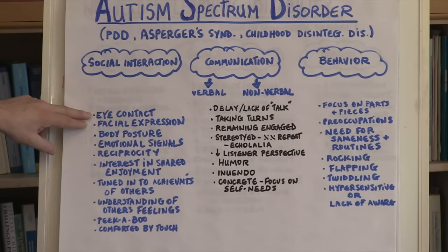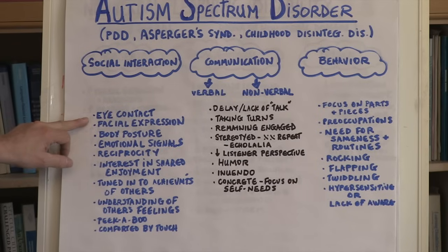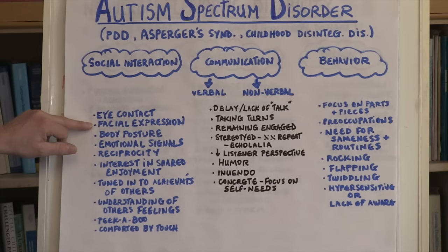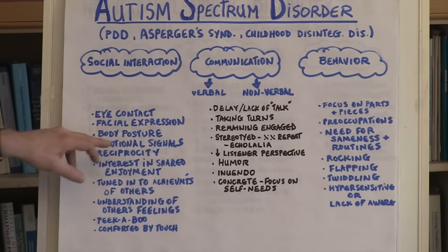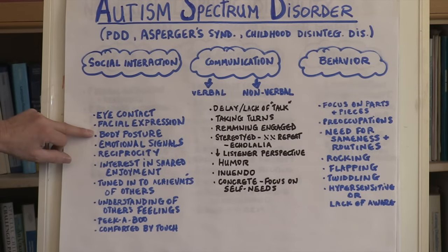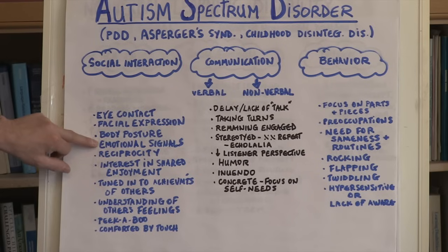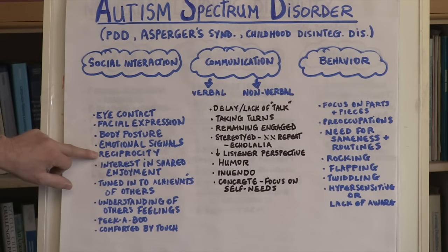In the social interaction area, individuals with autism have great difficulty maintaining and establishing eye contact. They have difficulty reading facial expressions, and their facial expressions at times are also somewhat flat and not particularly expressive. They have difficulties with body posture, knowing how to move their body or moving their body in ways that endear them socially with their peers. They have difficulty with emotional signals and reciprocity — that give and take you experience when you're in social situations with others.